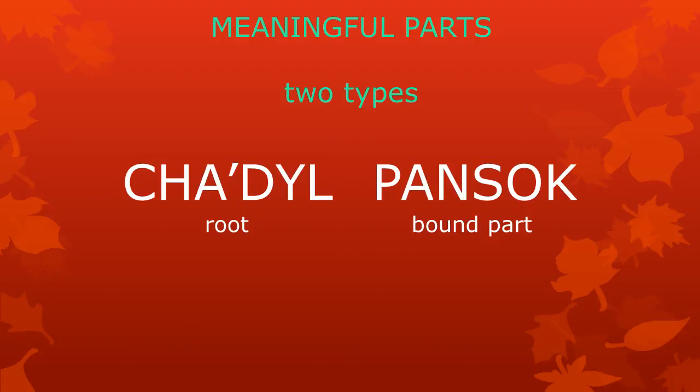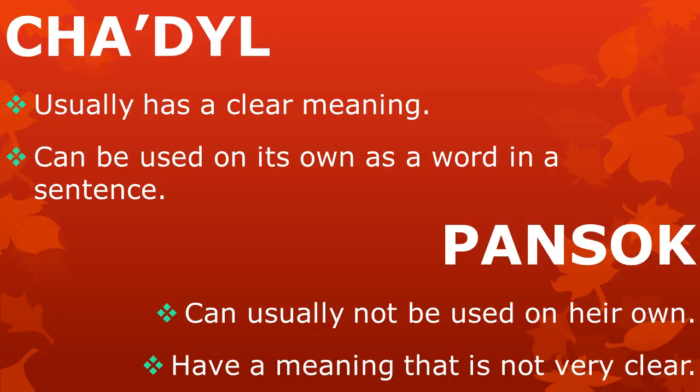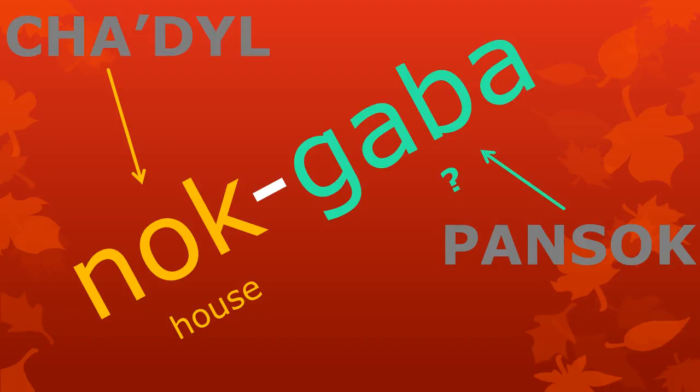So, we have two types of meaningful parts: tzadl, or roots, and pansok, or bound parts. Tzadl usually have a clear meaning and can be used on their own as words in a sentence. Pansok can usually not be used on their own as words in a sentence, and they have a meaning that is not very clear and difficult to talk about. It is easier to explain the meaning of 'nokk' than the meaning of 'gabah'.